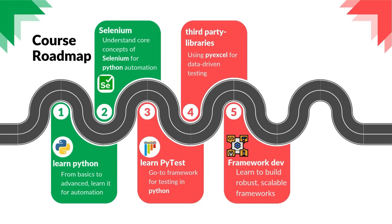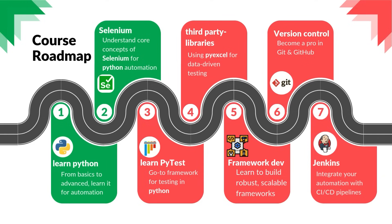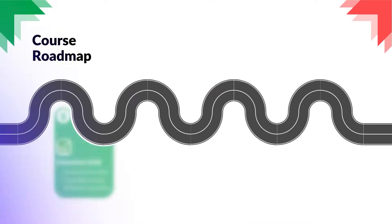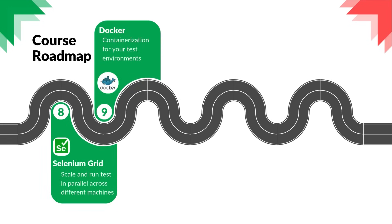Once the framework part is done, then we will be using version control. We'll understand Git and GitHub, and finally we will integrate with CI/CD. We will be using Jenkins as a CI/CD tool, but if you're using a different CI/CD tool, the concept will remain the same. After Jenkins, we'll also talk about Selenium Grid — how you can scale and run your tests on different machines with parallel execution. Selenium Grid can be done with or without Docker, but we will see how to work with Docker because in real time you will be using Docker with Selenium Grid.